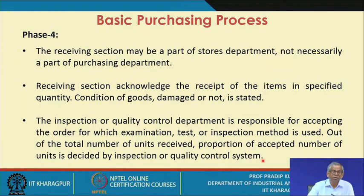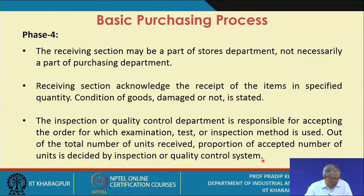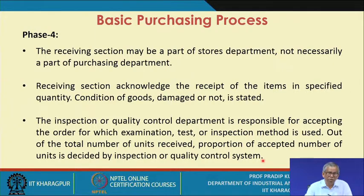Out of the total number of units received, the proportion of accepted units is decided by the inspection or quality control system. For example, out of 1000 units received, 990 or 900 may be accepted. This is the responsibility of the quality control or inspection department, which may be stationed at the receiving section of the stores or at the using department.